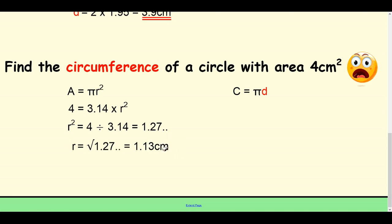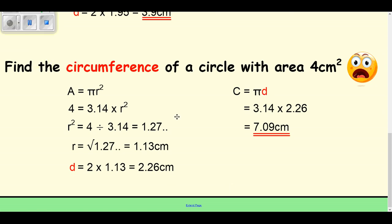Now again, I've got my C equals π d. Now I need the diameter, we did it in the example before. Double your answer. Now that I've got the diameter, I can put this into my C equals π d formula, 3.14 times 2.26. And I've got my answer. More complex question requiring you to think quite a bit about that. Here you go. Thank you.